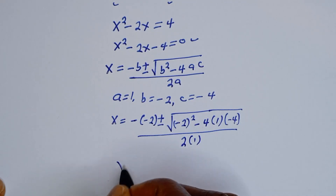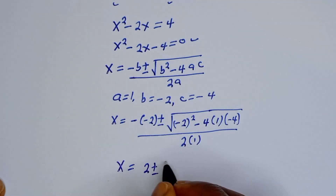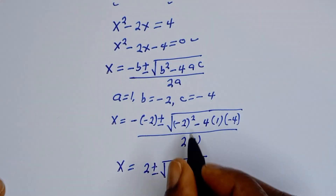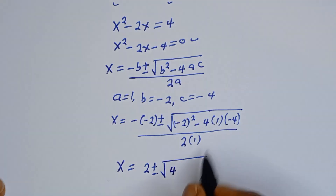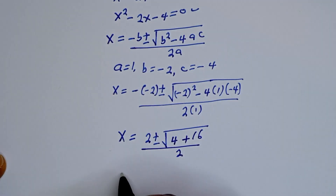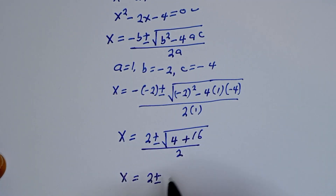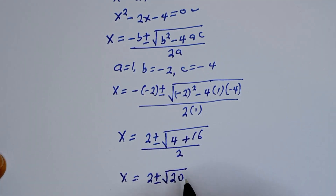Then x is equal to 2 plus or minus square root of negative 2 squared, that is 4, minus 4 times 1 times negative 4, that is plus 16, over 2. So x is equal to 2 plus or minus square root of 16 plus 4, that is 20, over 2.